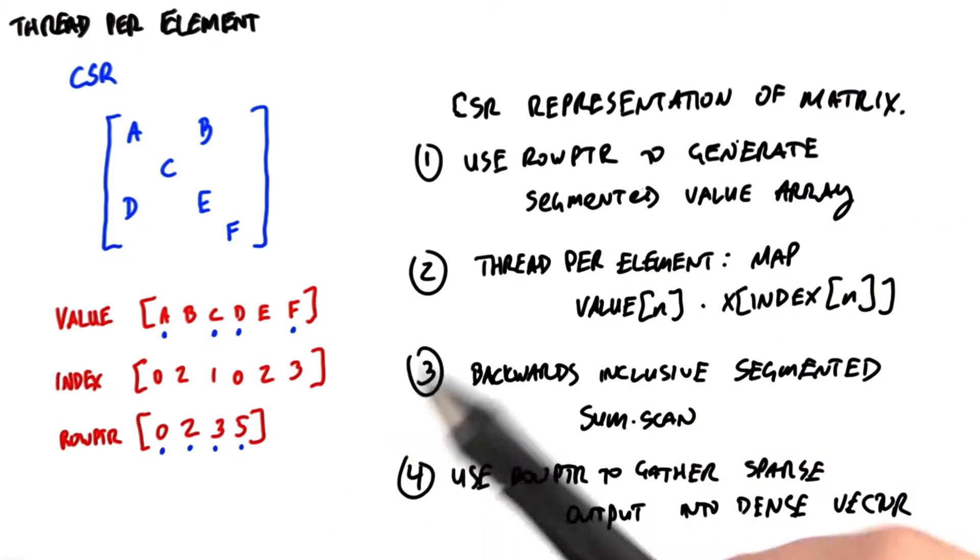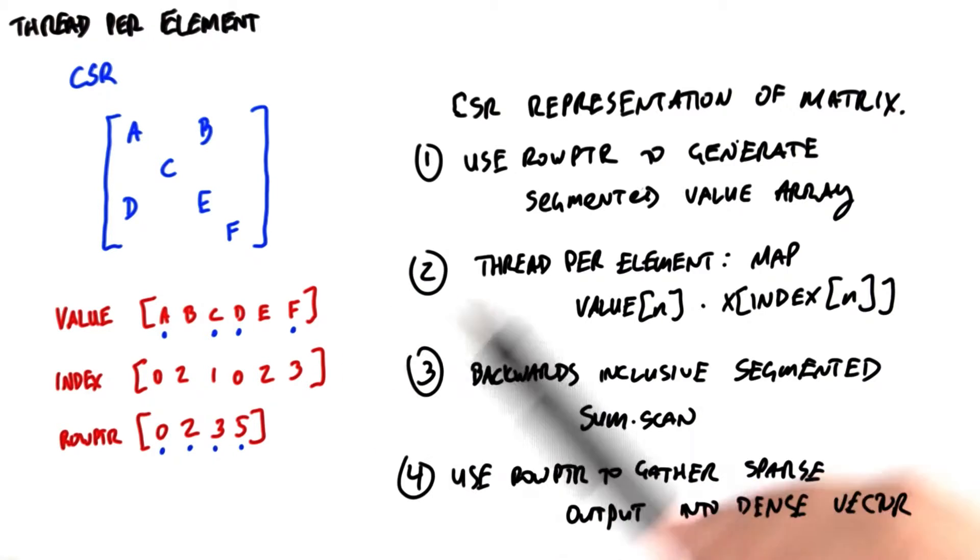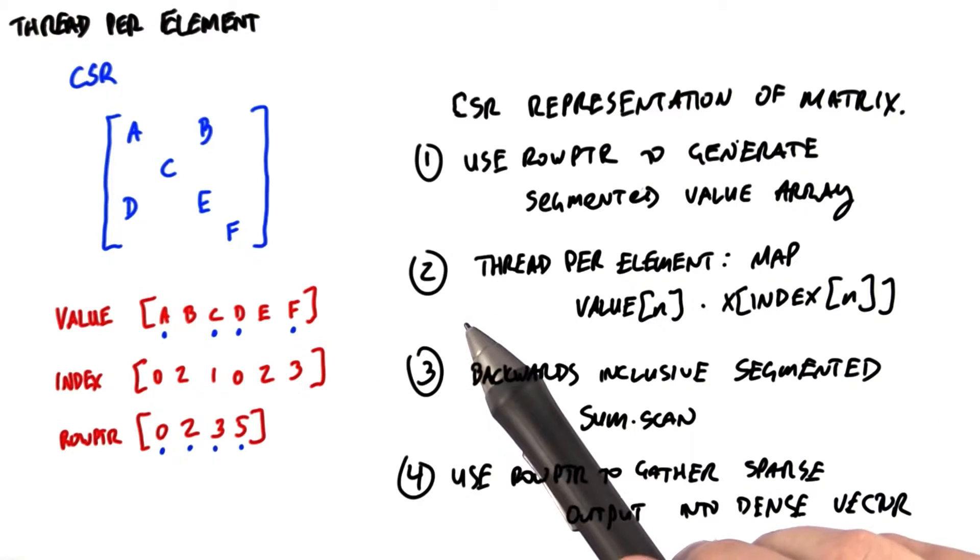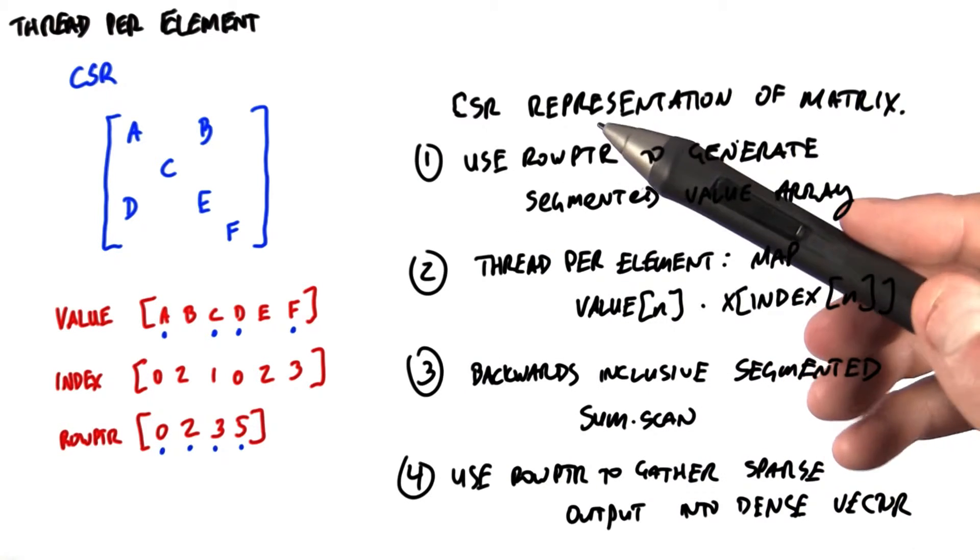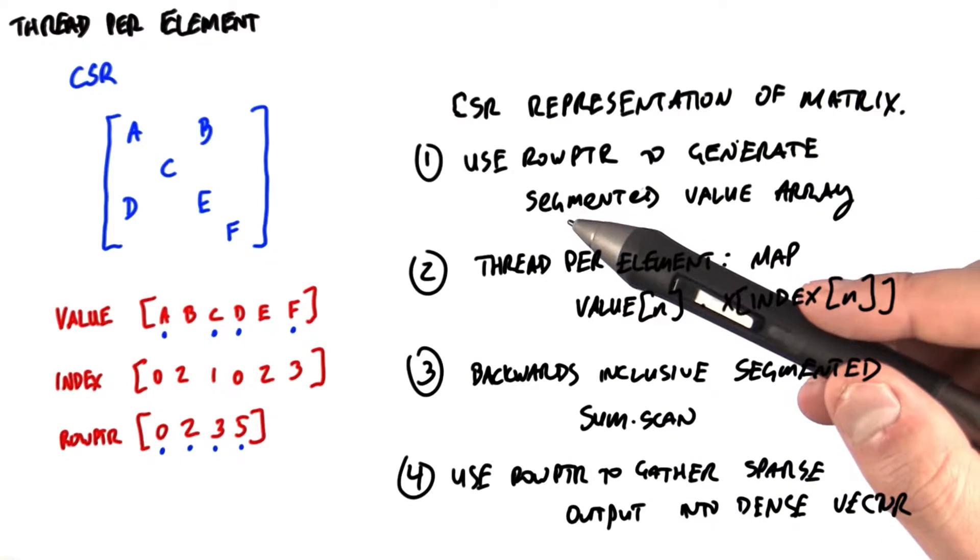Then we're going to launch a thread for each element in the matrix. We're going to multiply it by the corresponding vector element, which we fetch using the index data structure. For thread n, that code will look like value of n times x of index of n.